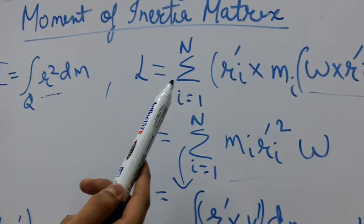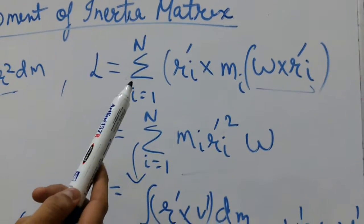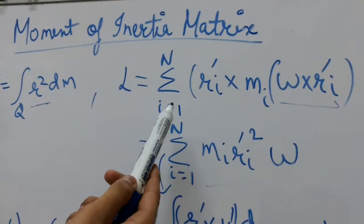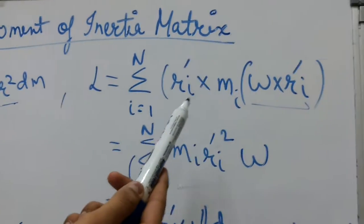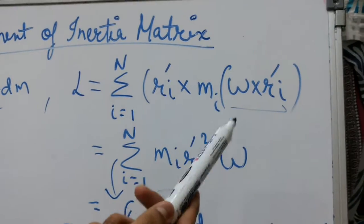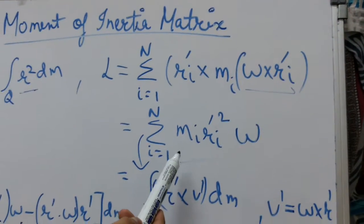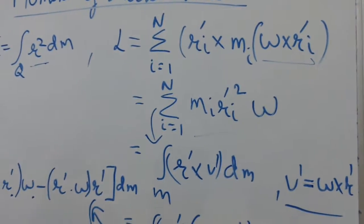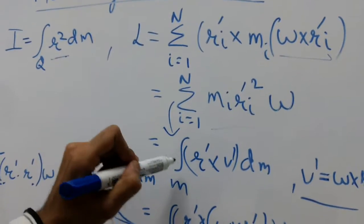Now I am going to discuss the total angular momentum of a system of particles about center of mass. It can be written as summation i equals 1 to N, ri dash into mi omega cross ri dash vector. It can be written as mi into ri dash squared into omega. I can replace this summation by an integral for continuous mass distribution.